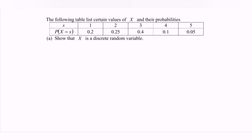Let's refer to the question. The following table lists certain values of X, which is the random variable, and their probabilities. So here we have the table.